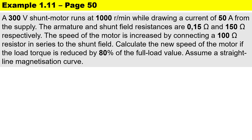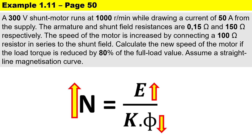The armature and shunt field resistances are 0.15 ohms and 150 ohms respectively. The speed of the motor is increased by connecting a 100 ohm resistor in series with the shunt field. Calculate the new speed of the motor if the load torque is reduced by 80% of the full load value.